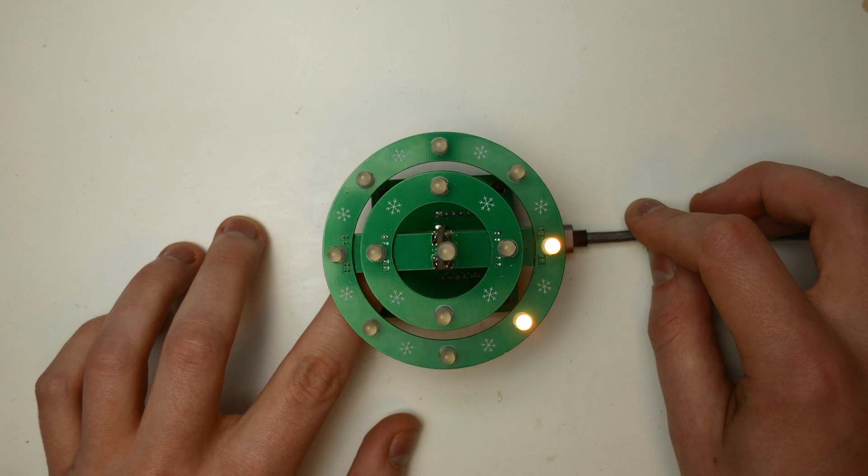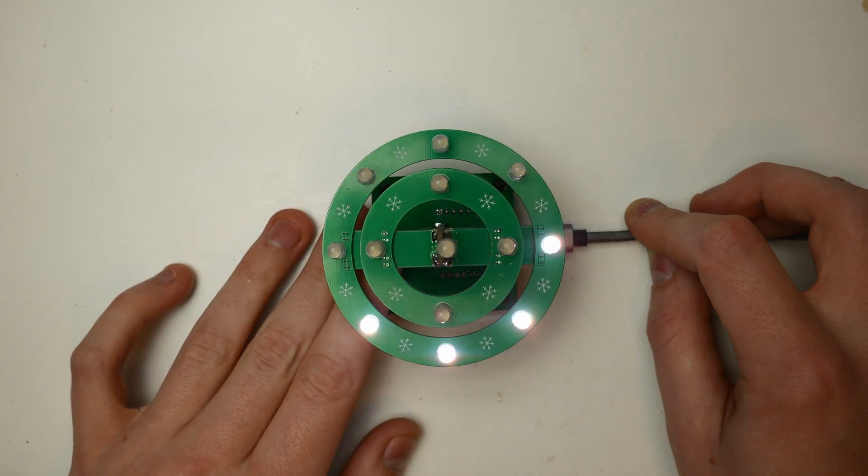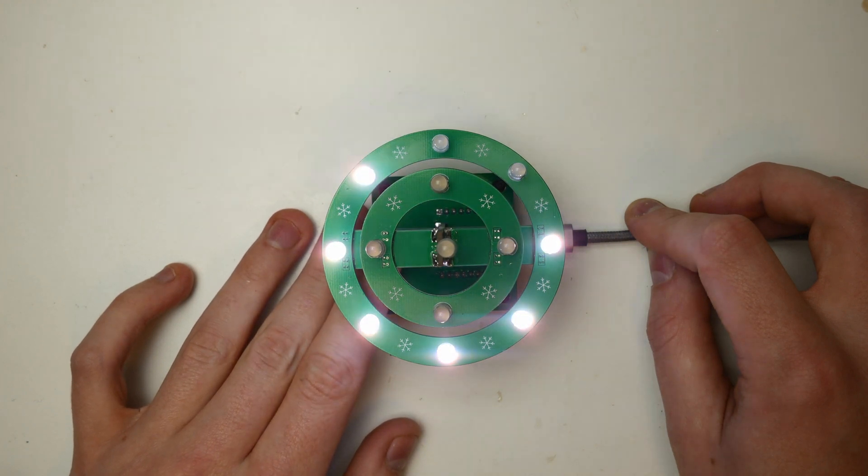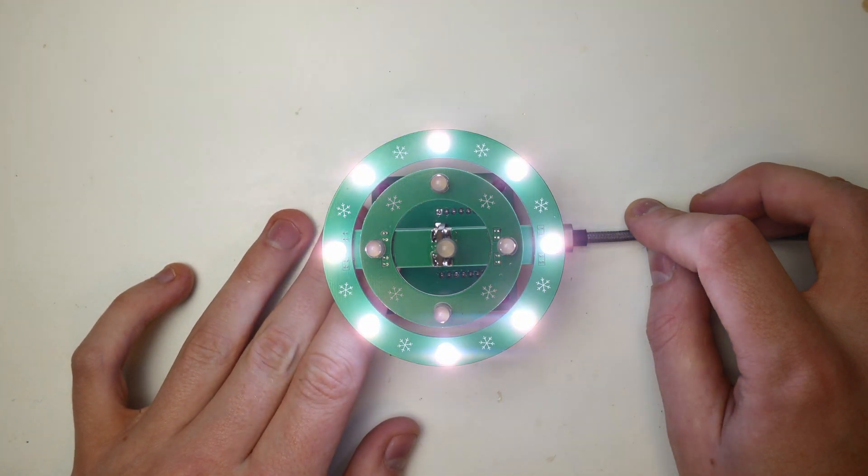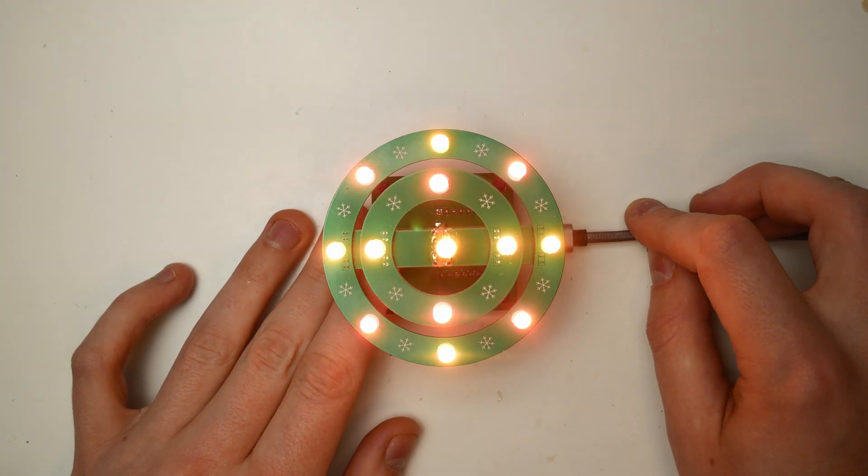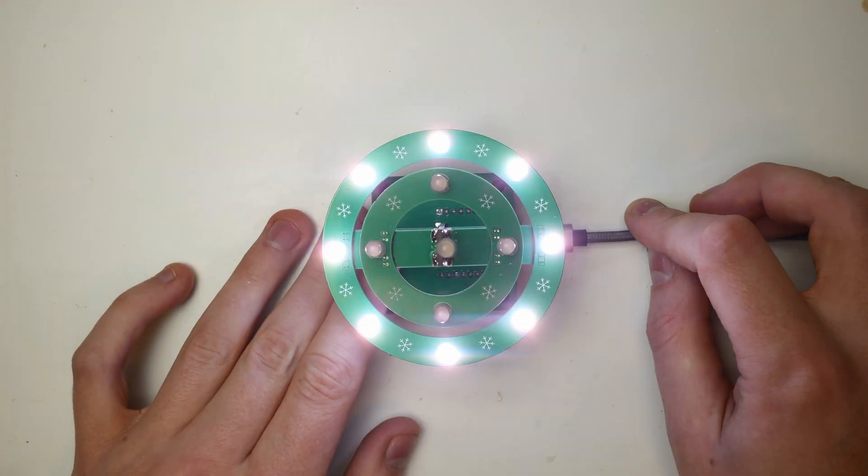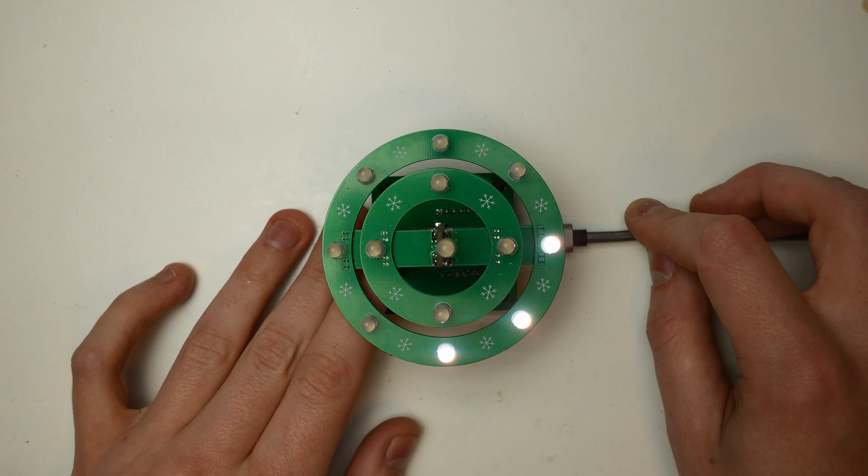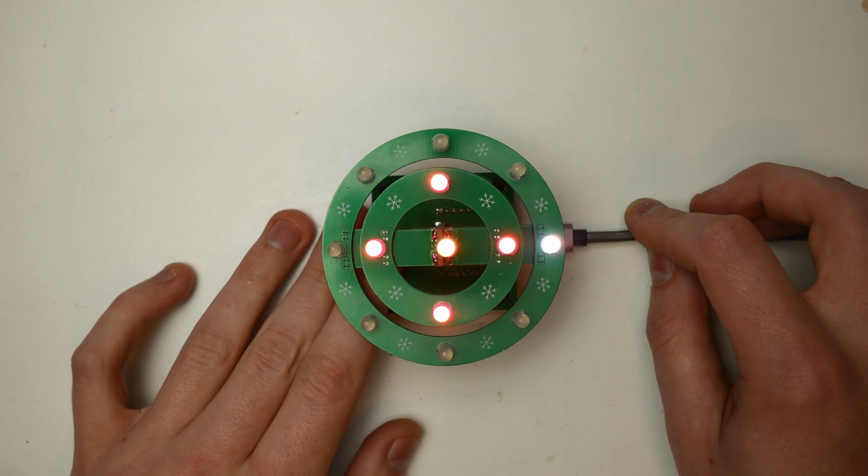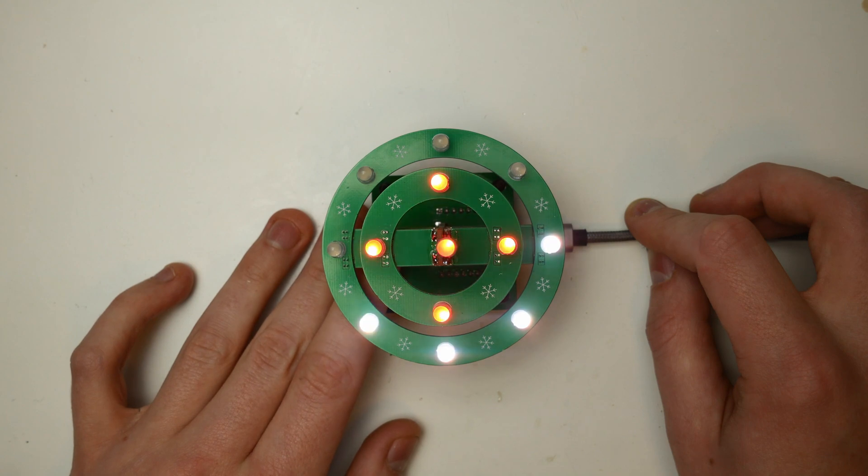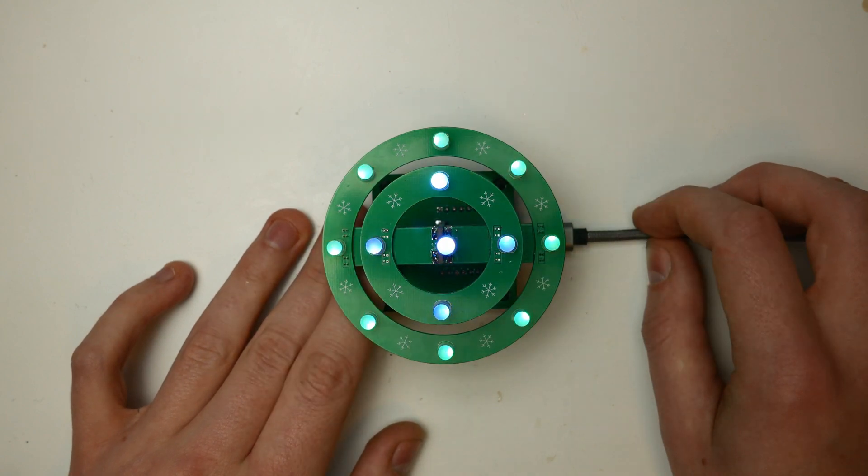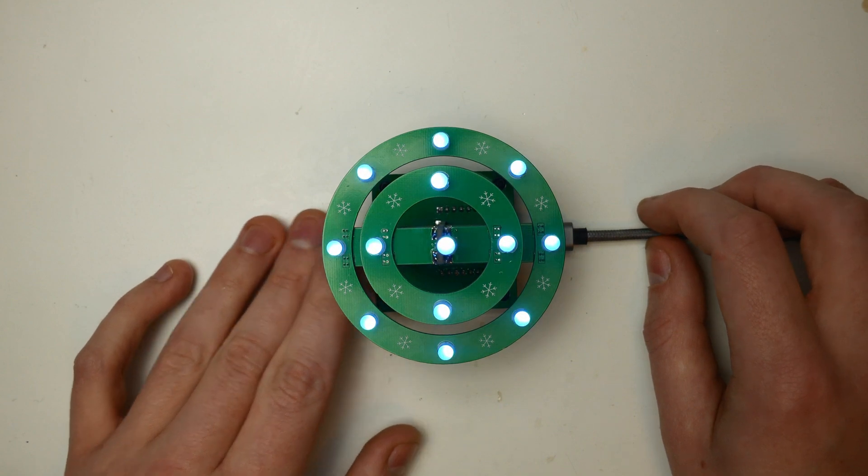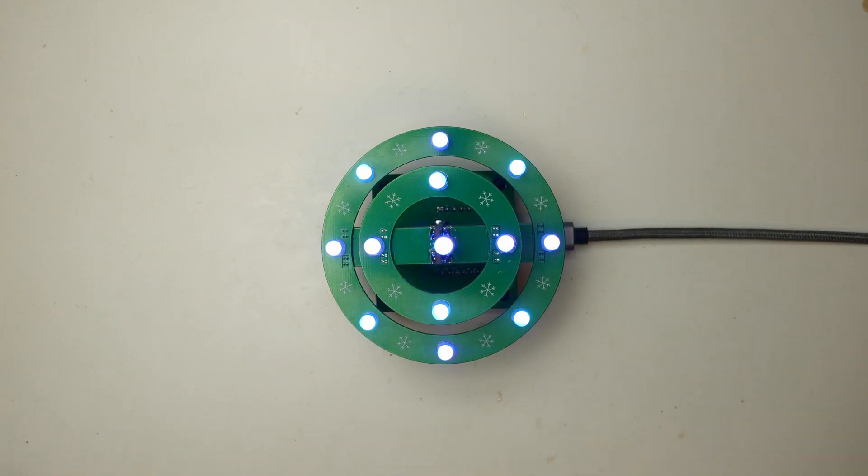If you hold the button for at least one second you enter the configuration mode. If you let go when only the tip is lit you can change the brightness with clicks and double clicks. If you hold the button down again for a second you exit the menu. If you let go when the upper ring is lit you can choose the color scheme. When the lower ring is lit and you release it you activate the wireless mode. You can currently update the software with this but more features are planned.